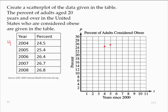2006 would mean t equals 6, t equals 7, t equals 8. So 2006 at 26.4, 2007 at 26.7, a little bit higher, and 2008 at 26.8.